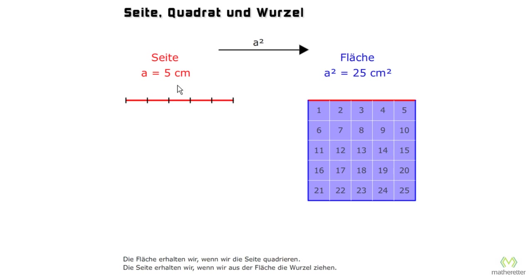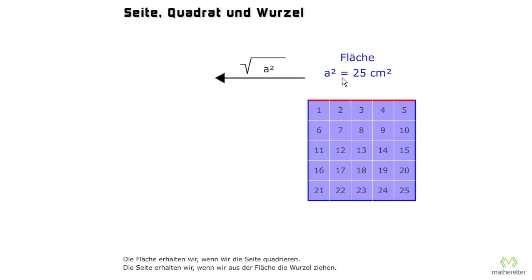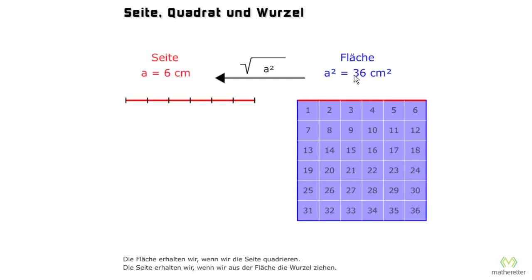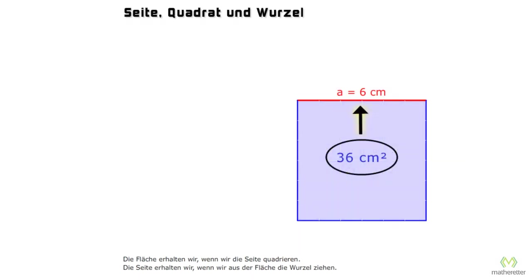However, imagine we did not know side A, and someone gives us 25 square centimeters as the area. If we want to find the length of the side, then we would calculate the root. The square root of 25 is 5, so this side has length 5. The square root of 36 equals 6, so this square has a side length of 6. The root always gives us the side of a square that, when multiplied by itself, gives the area. So if we only have the area of the square, we can always figure out the side.